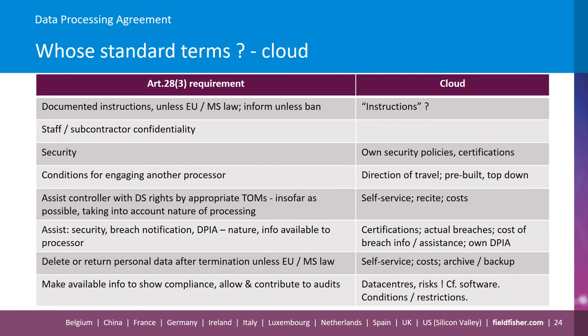As regards conditions for engaging another processor, the direction of travel is different, because it's not like traditional outsourcing where you go and find a processor which then finds a subprocessor to perform a particular tailored service. Cloud is the other way — it's already been pre-built by the cloud provider using its own subprocessors. Therefore, the conditions for engaging another processor have to be complied with slightly differently, including pre-authorization by the customer of the cloud provider's existing subprocessors, notice of change of processors, and a right for the customer to terminate.